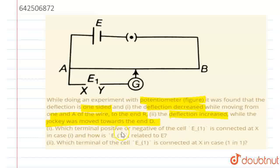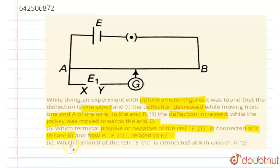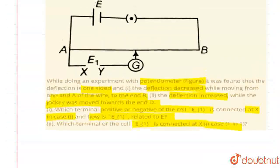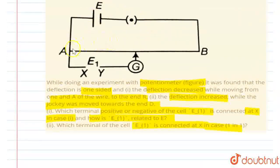So which terminal — positive or negative — of the cell E1 is connected at X in case 1? And how is E1 related to E? That is the first question. You have to identify the potentiometer circuit first. AB is a potentiometer wire in which you have two batteries connected.